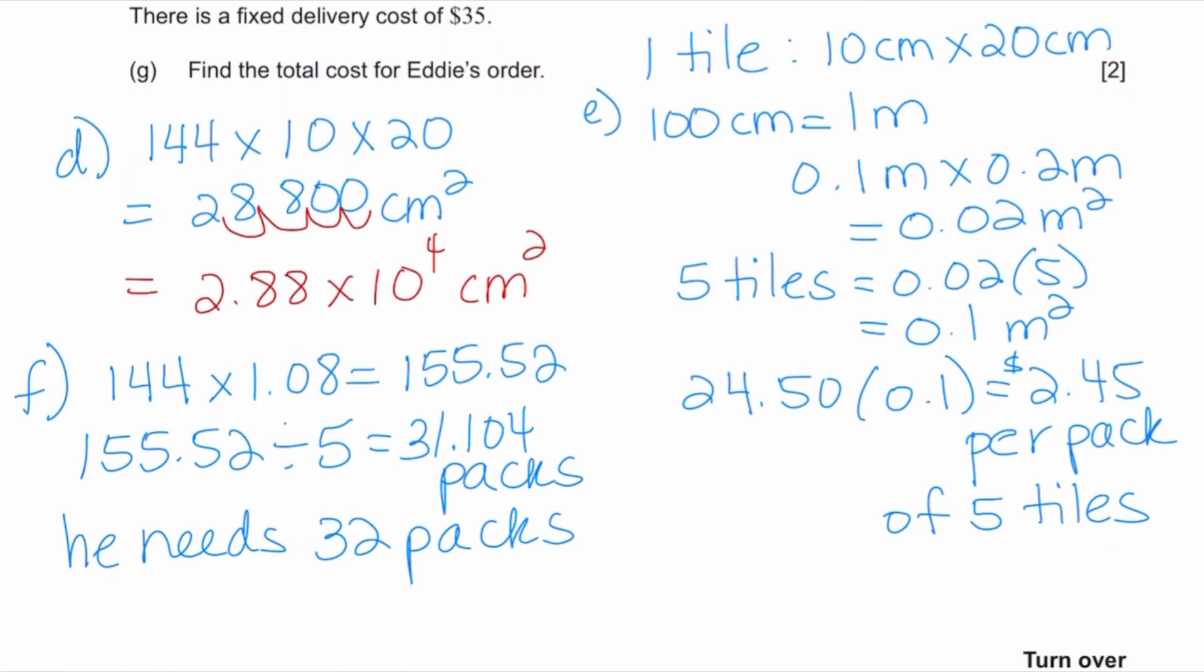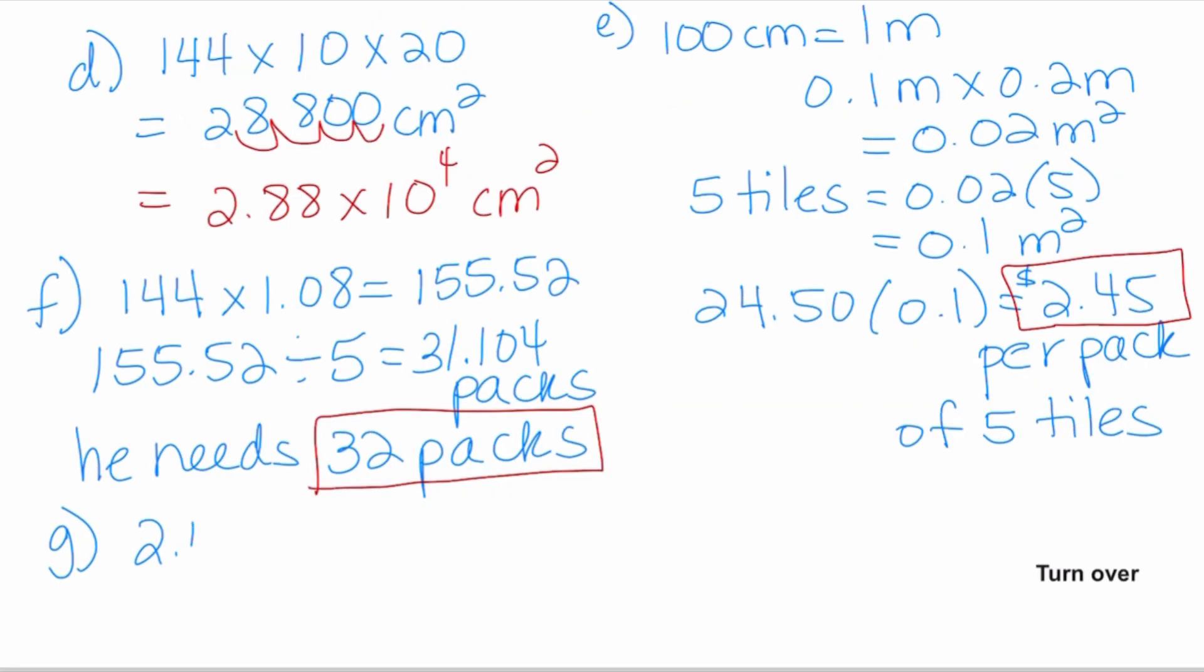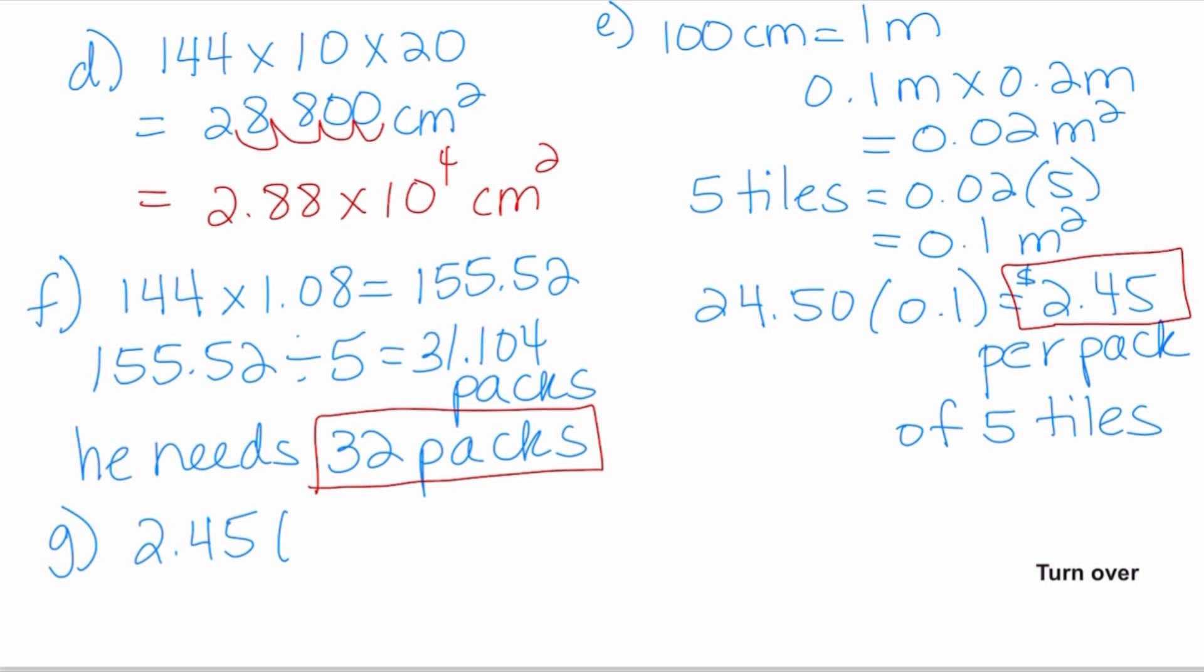Finally, in part g, it says there's a fixed delivery cost of 35. Find the total cost for Eddie's order. This is where every one of you can get follow-through points. You have determined the cost of each pack of tiles. So if you take the cost of your pack of tiles, which the correct answer is two dollars and 45 cents per pack, and you multiply that by the amount of packs that he needs, which we found correctly to be 32 packs, and then you add the 35 delivery fee, just for showing that whatever values you got, you should be getting follow-through points. And so those are going to be two easy points for you to get on the exam. The correct answer is one hundred thirteen dollars and forty cents.